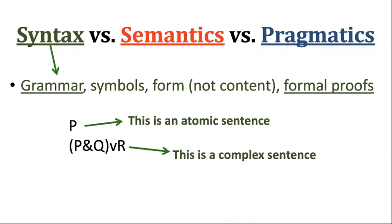Let's start with the simplest: syntax. Just think of syntax as the grammar of a language, and this applies to both the syntax of a natural language like English as well as a formal language like Bool or Prop or FOL. When we talk about what symbols count as part of the alphabet of the language and how to construct those symbols in ways that make grammatically well-formed sentences — like capital letter P is an atomic sentence, and 'P and Q or R', if written in this way, is a grammatically well-formed complex sentence — the grammar is not something about the meaning of the symbols. It's just about the rules for using them; it's about the form or structure you're allowed to put them in.